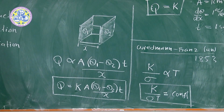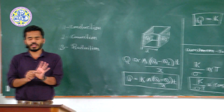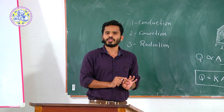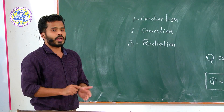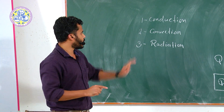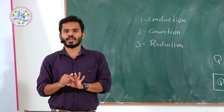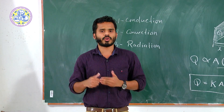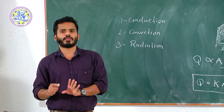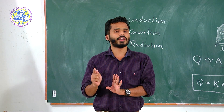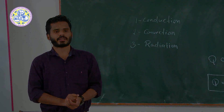In conclusion, what we have studied today is heat energy transferring from one point to another, always from the hotter region to the colder region. The different ways of heat transferring are conduction, convection, and radiation. The Wiedemann-Franz law states that the ratio of thermal conductivity to electrical conductivity for any metal is the same at a given temperature. This is all about today's lecture. Thank you.